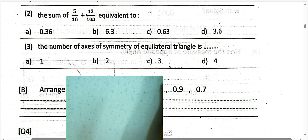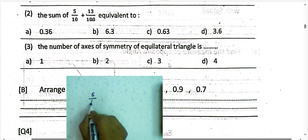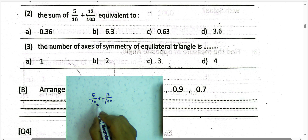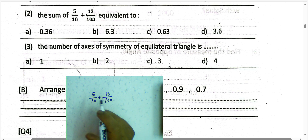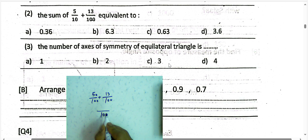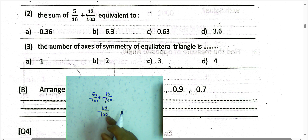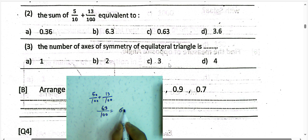Next question: find the sum of 5/10 and 16/100. We multiply the numerator of 5/10 by 10 to get 50/100. Then 50 plus 16 equals 66 over 100. We must put the decimal point after two places, so the result is 0.66.